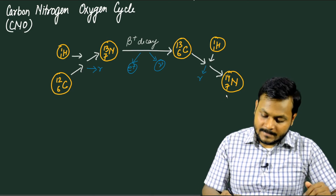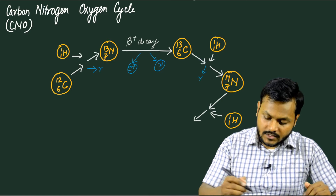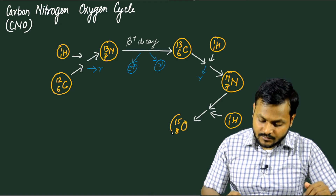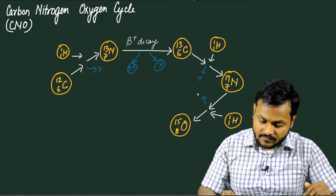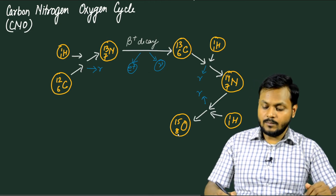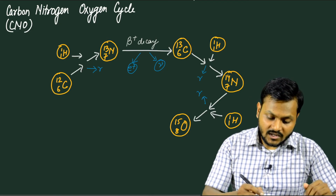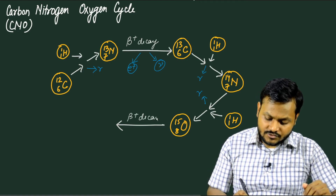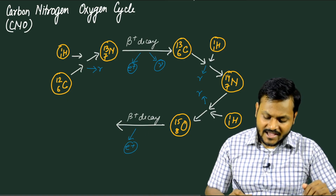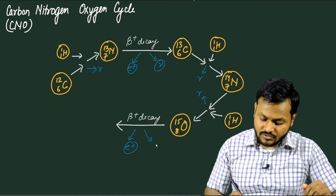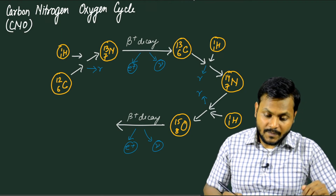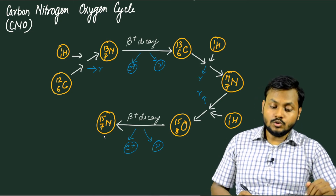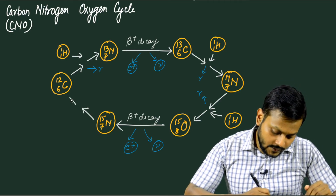Nitrogen-14 then combines with another hydrogen nucleus to form oxygen-15, which contains 8 protons and 15 nucleons; this is also accompanied by the emission of a gamma photon. Oxygen-15 is unstable and undergoes positive beta decay, emitting a positron and a neutrino — and possibly gamma radiation — as a proton is converted to a neutron, ultimately producing nitrogen-15.